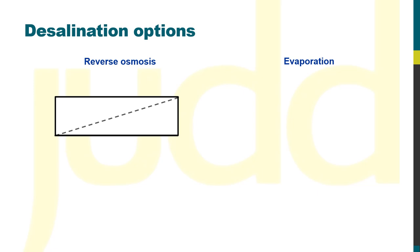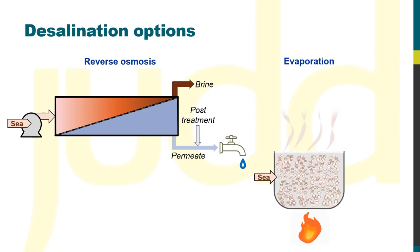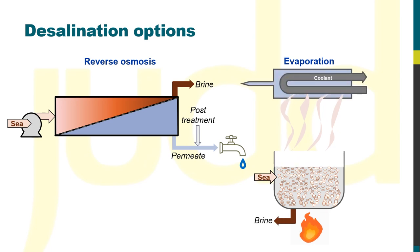For RO, the seawater entering the membrane produces a concentrated brine waste stream and a permeate potable water product stream. This permeate stream requires post-treatment to stabilise the pH by adding alkalinity. Evaporation uses heat to turn the water into steam, which is subsequently condensed to produce a pure water product. Like the RO permeate, this condensate product needs to be stabilised to be usable as potable water.